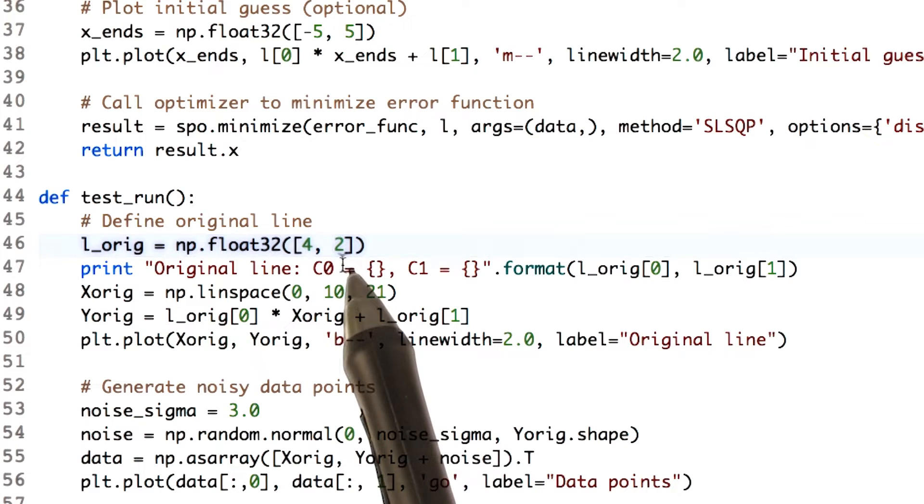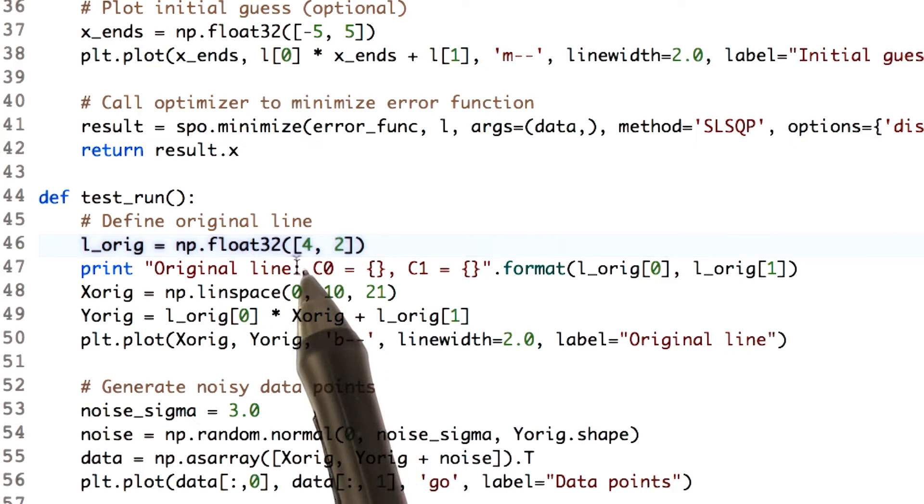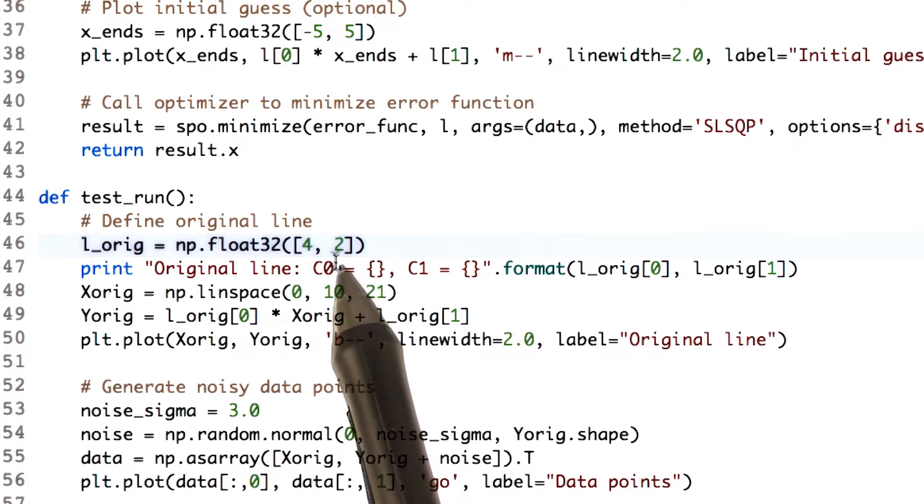It's just a two element array. It'll have a slope of four, so coefficient zero is four, and a y-intercept of two, so coefficient one of two.